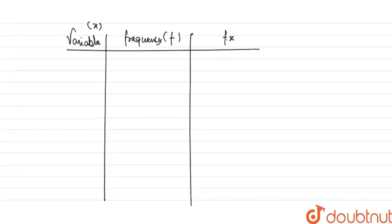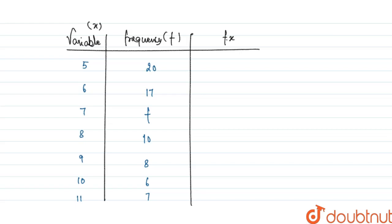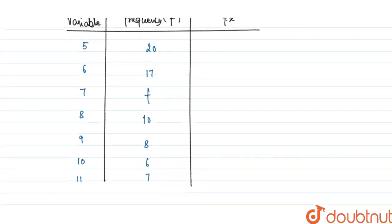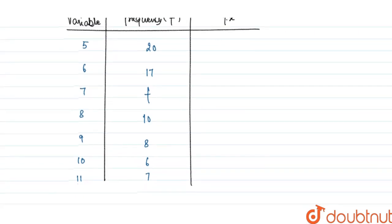Let's fill the table. The variables are 5, 6, 7, 8, 9, 10, 11, and 12. The frequencies are 20, 17, f, 10, 8, 6, 7, and 6 respectively.